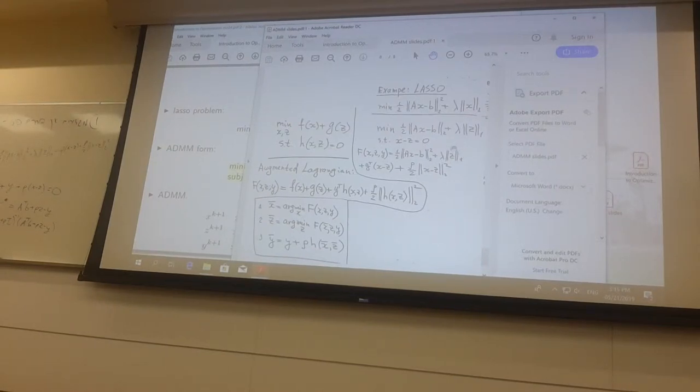What do we have depending on Z? Norm 1 of Z plus linear term plus quadratic term. And pay attention that all three terms are separable. Every component of Z comes as independent element in the sum.